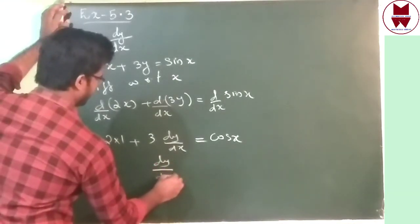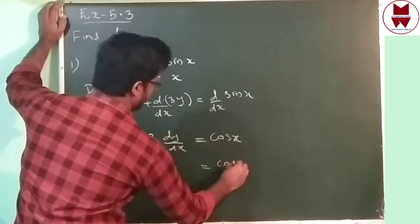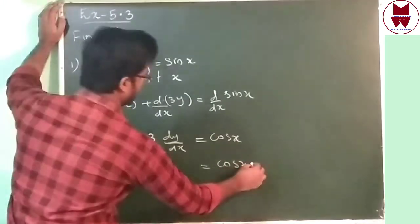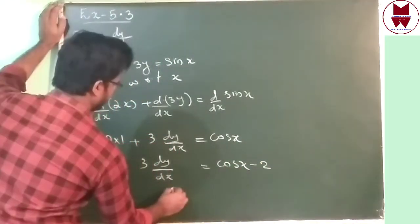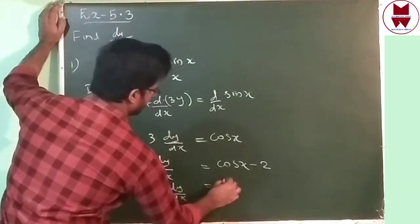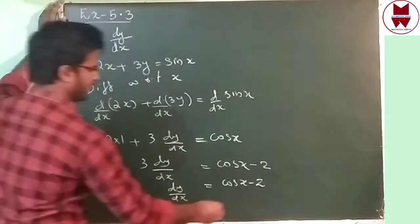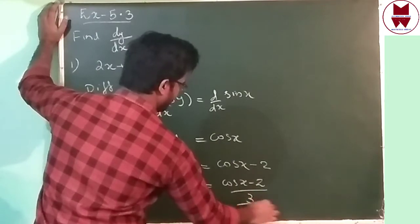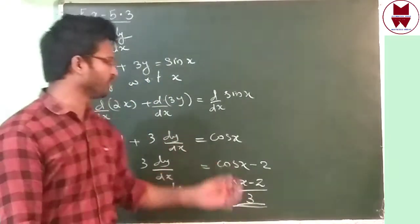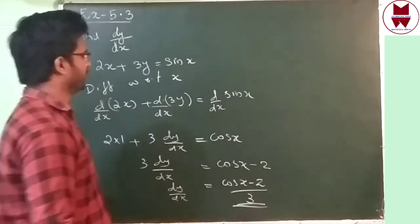So we get 3 dy/dx = cos x. This 2, that is 2 × 1 = 2, bring to the right side — that will be minus 2. So 3 dy/dx = cos x − 2. This 3 bring to the right side, that will be divided by 3. Now dy/dx = (cos x − 2) / 3.